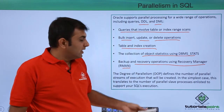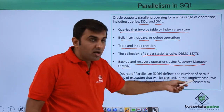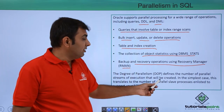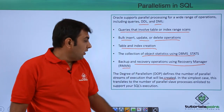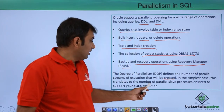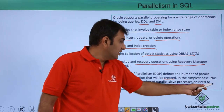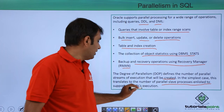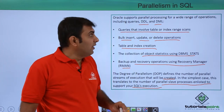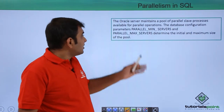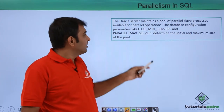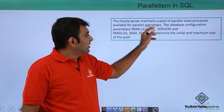The Degree of Parallelism, or DOP, defines the number of parallel streams of execution that will be created. In the simplest case, this translates to the number of parallel slave processes enlisted to support your SQL execution. Oracle server maintains a pool of parallel slave processes available for parallel operations.